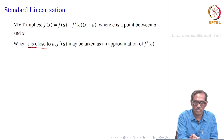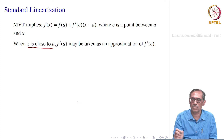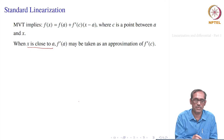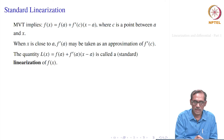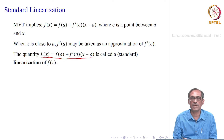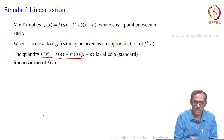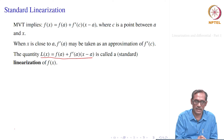When x is close to a, f prime of a is close to f prime of c, so we define the new function L of x equal to f of a plus f prime of a times x minus a. We call this L of x the linearization of f of x at a. Of course it depends on a, since L itself depends on a.